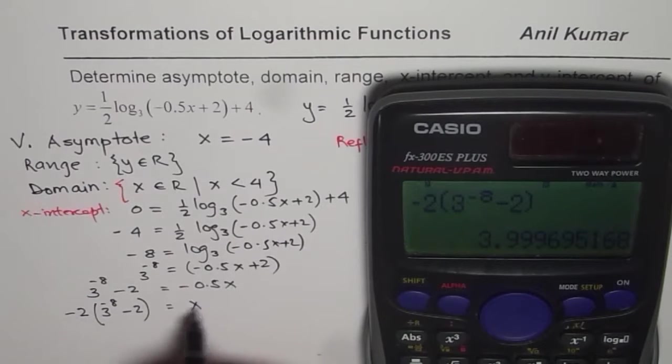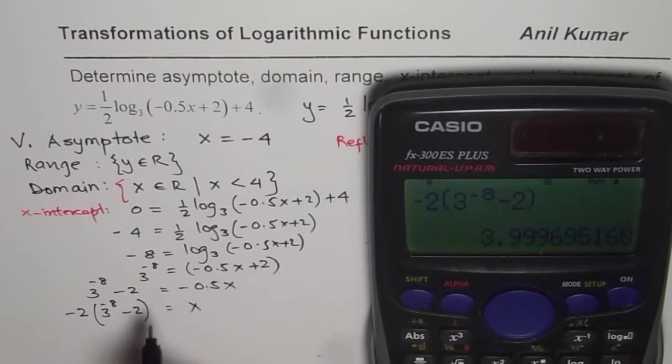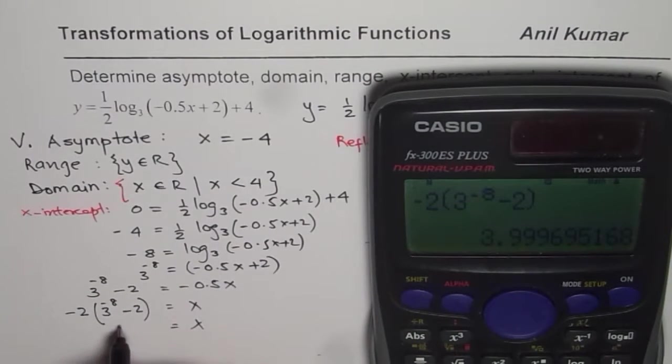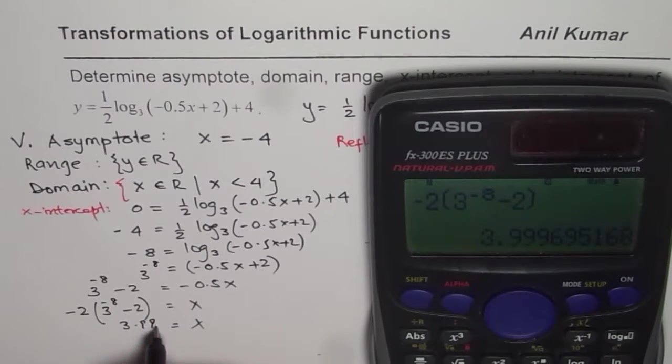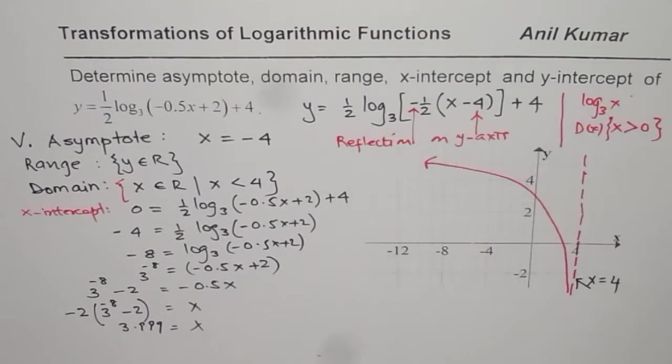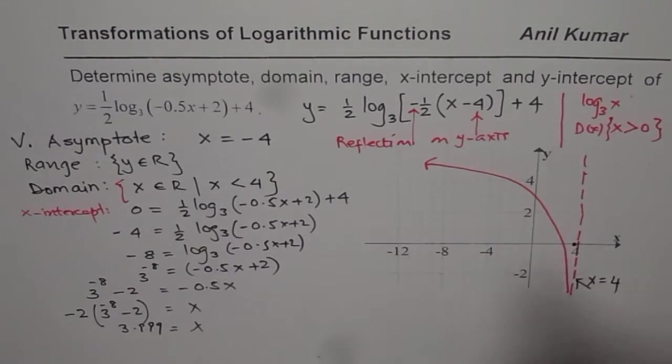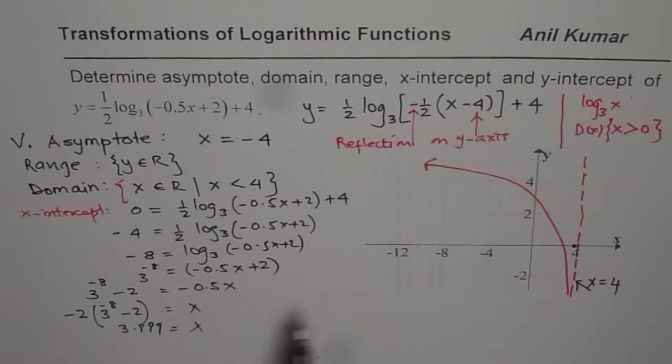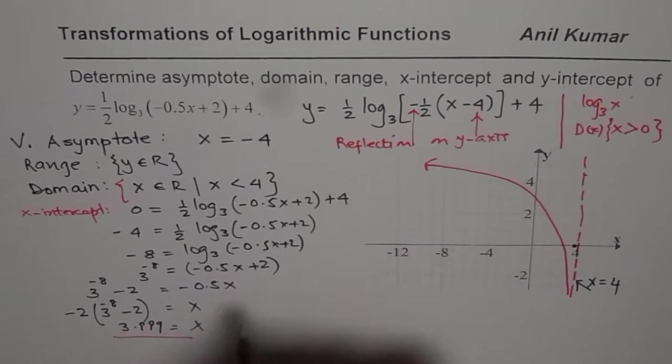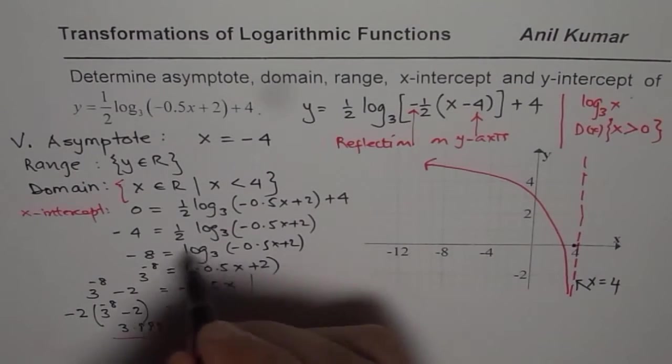We get a value of x equals 3.999. You can see it is very close to 4. The graph actually goes very close to 4. So our x-intercept is very close to 4. That is the x-intercept.